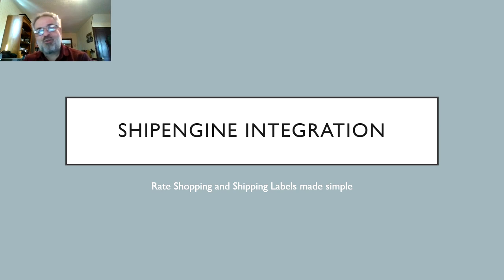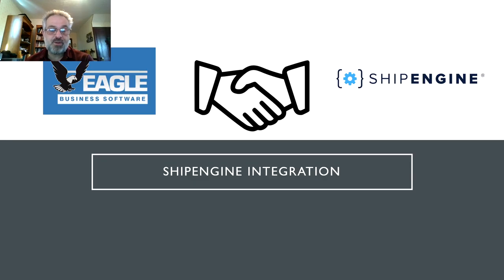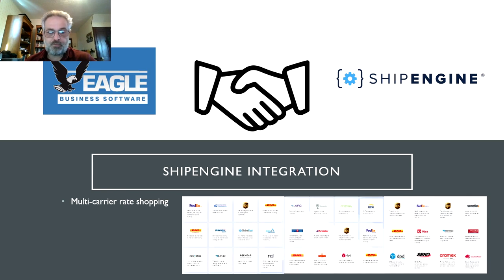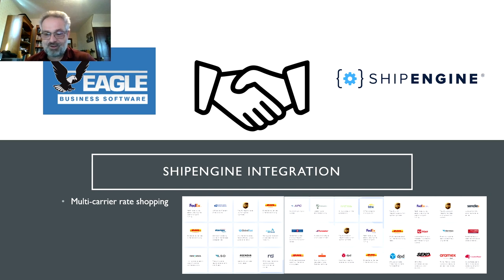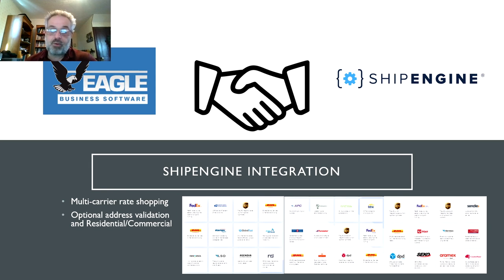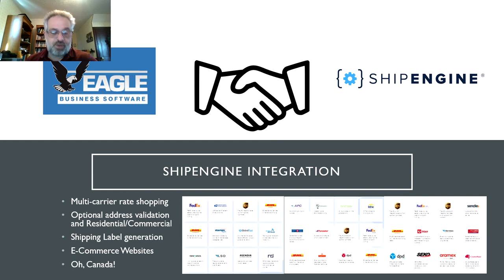An exciting new feature in EBMS 8.4 is integration with ShipEngine — making rate shopping and shipping label generation simple. This is a partnership between Eagle Business Software and ShipEngine delivering multi-carrier rate shopping. Supported carriers include FedEx, UPS, USPS, DHL Courier, and many more. Optionally, you can enable address validation — ShipEngine will determine whether an address is commercial or residential — and it generates shipping labels for your packages. ShipEngine is supported for both the United States and Canada.